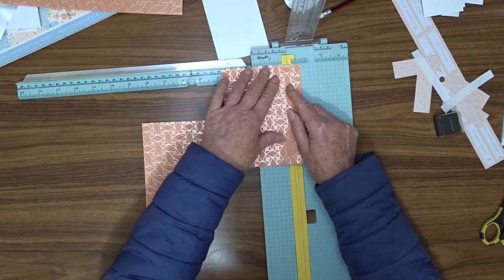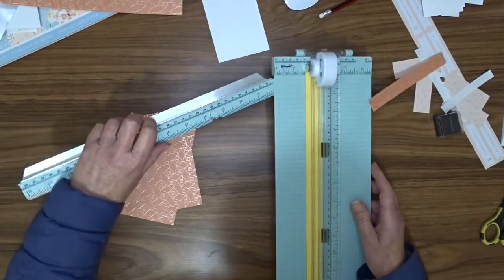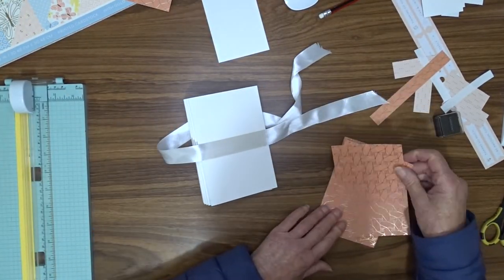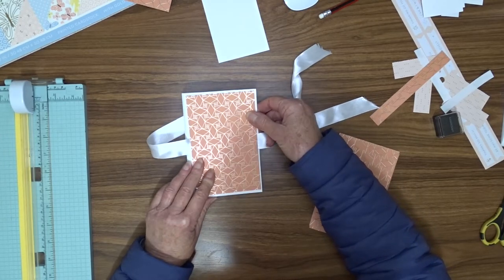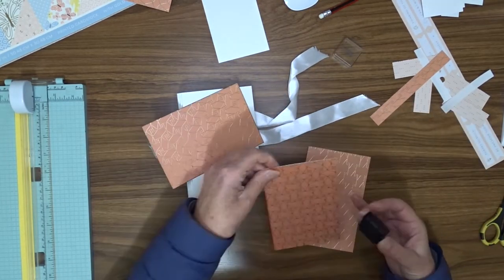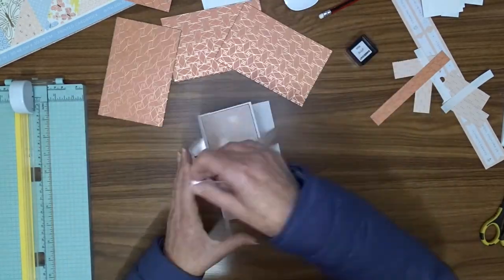You could cut a fourth one if you wanted to and put it on the back of the card, but I didn't think that was necessary. I ink around the edge of each of these panels and use double-sided tape to attach them to my card.